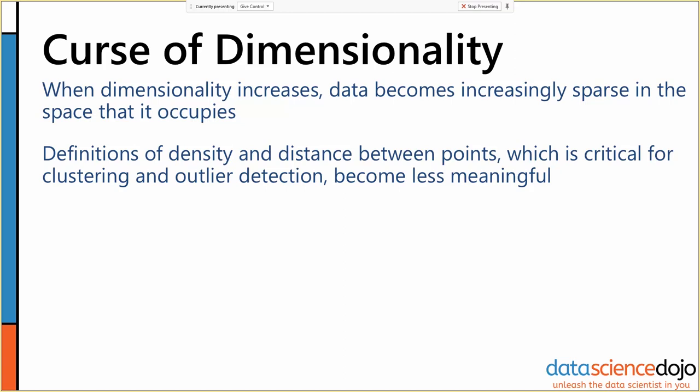The curse of dimensionality is that as your number of dimensions increases, so as the number of columns, the number of attributes you have in your data set increases, the data inherently becomes increasingly sparse in that space.